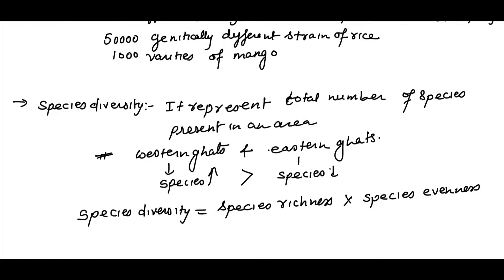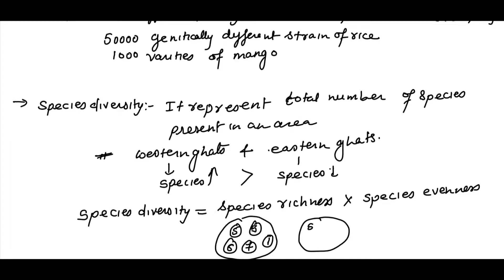Species evenness is the proportionate number of individuals of different species. For example, consider an area with five different species having counts: five, five, six, seven, one — versus another area with five, five, six, seven, eight. The second area has more species diversity because species diversity equals richness plus evenness.